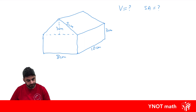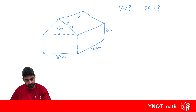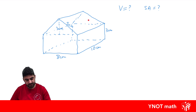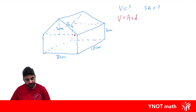To find the volume, we just need to look for two faces that are the same, find the area of one of them, and multiply by the distance in between them. We can draw in some hidden lines, and you can see that this front face is exactly the same as the back face. Volume equals the area times the depth — the area of the front face multiplied by the distance between them, which is 10.